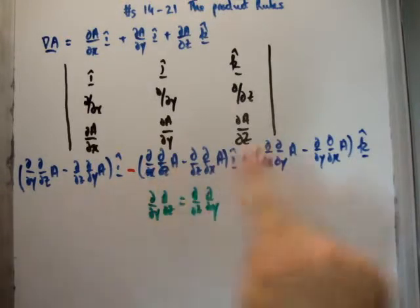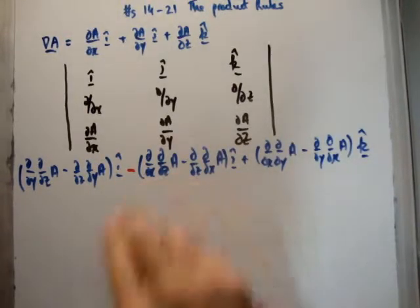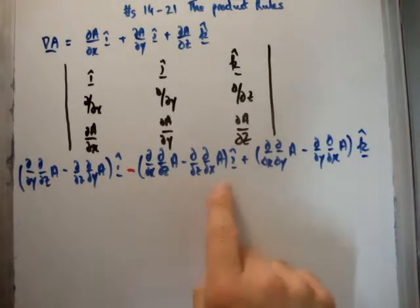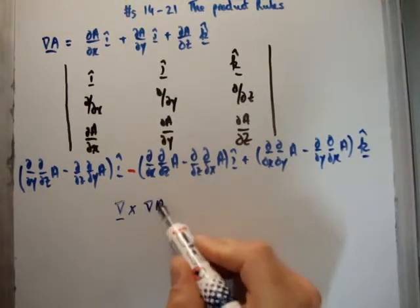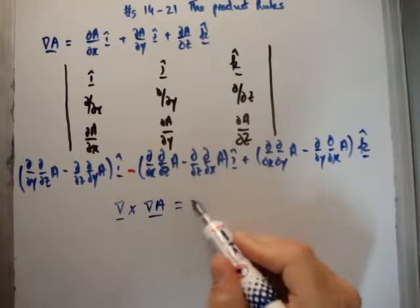So that means each of these can be written again. So for example, in the middle here we have X, Z, Z, X, so we can swap them, and it turns out then that they are the same quantity. So everything goes to zero, and what we're left with is that the curl of the gradient of any scalar function, A in this case, is zero.